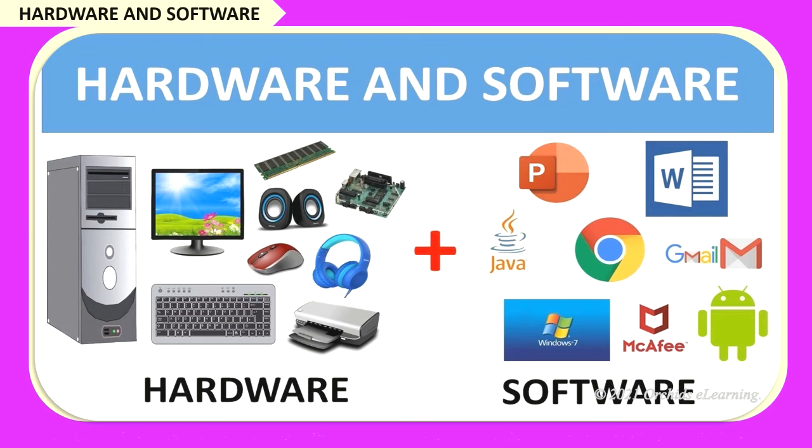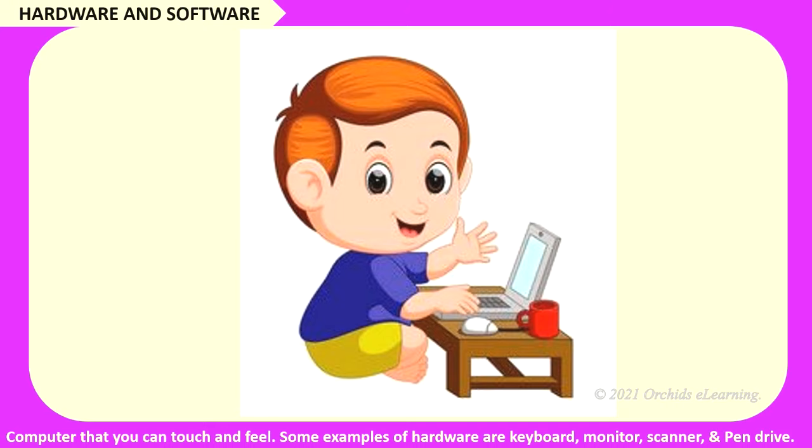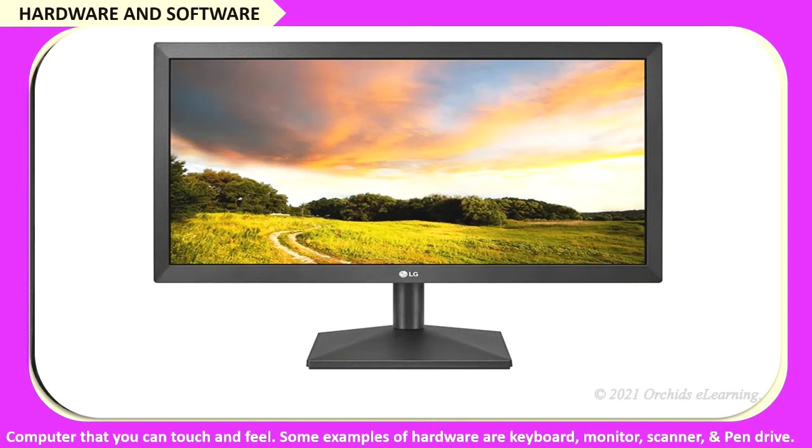A computer system can be classified into hardware and software. Hardware refers to the physical parts of a computer that you can touch and feel. Some examples of hardware are keyboard, monitor, scanner, and pen drive.